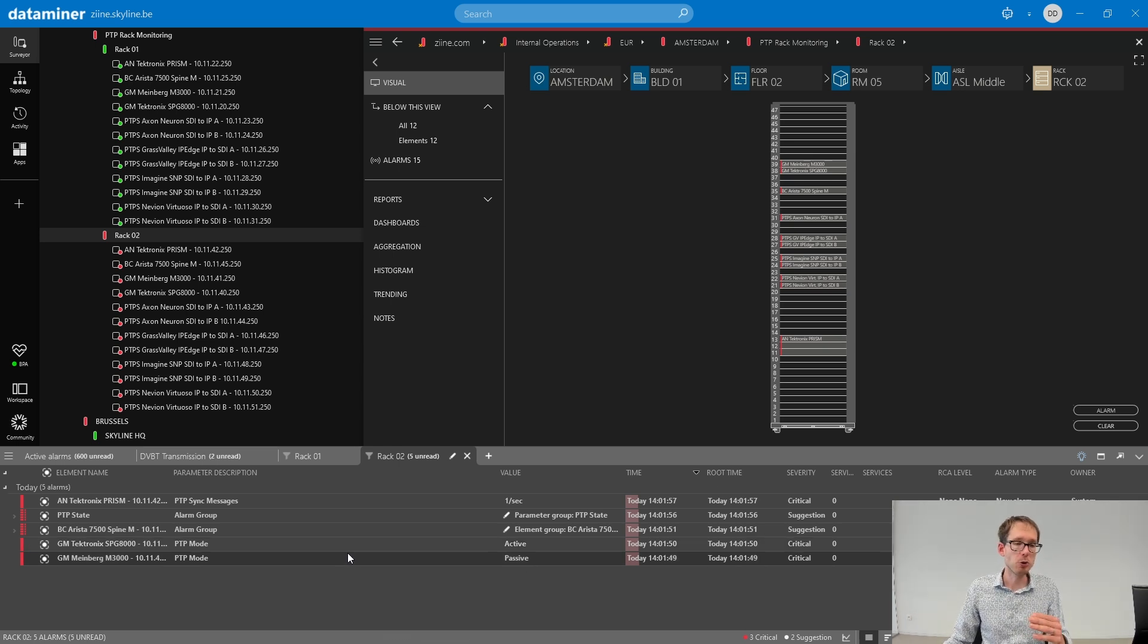And what do you see? You see that indeed DataMiner was unable to group all of the alarms together. It was however able to group some alarms together because some alarms happened on the same element, the BC Arista, and there was also a parameter group. Let me clean up everything.